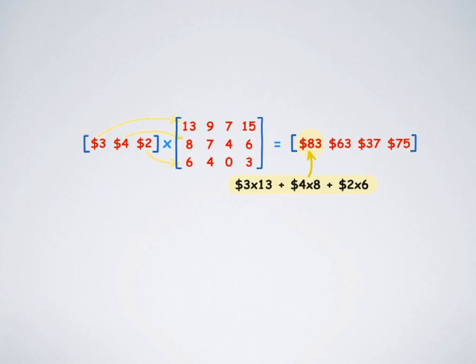You multiply the first row first column to the first row first column of the second matrix. 3 times 13 plus the second column first row of the first matrix, 4 times 8, plus the third column first row of the first matrix to the third row first column of the second matrix which is 2 times 6. The total yield is $83.